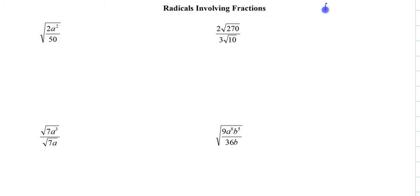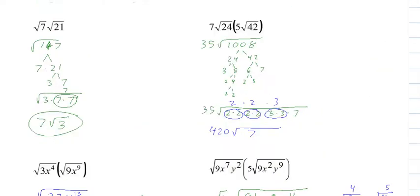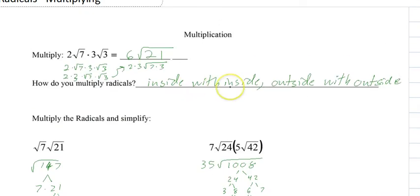So we have two steps, and they're not really steps, they're like a checklist. Number one is you have a fraction, so you want to simplify. And the same rule still applies as multiplying, which was inside with inside, outside with outside.